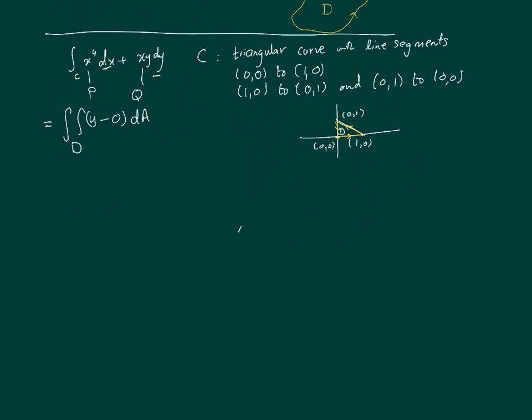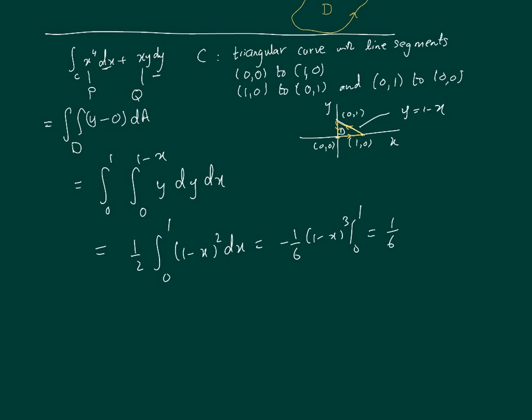What region are we talking about? In this case, our range of values of x, this is the x and y. Your x is going from 0 to 1, and your y is going from y equals 0 to y equals 1 minus x. That's the integral we're calculating, dy dx. That gives us y squared over 2, which becomes a half integral from 0 to 1 of (1-x)^2 dx. That turns out to be minus 1/6 (1-x)^3 from 0 to 1. The final answer turns out to be 1/6. We've very easily calculated this double integral using Green's theorem.